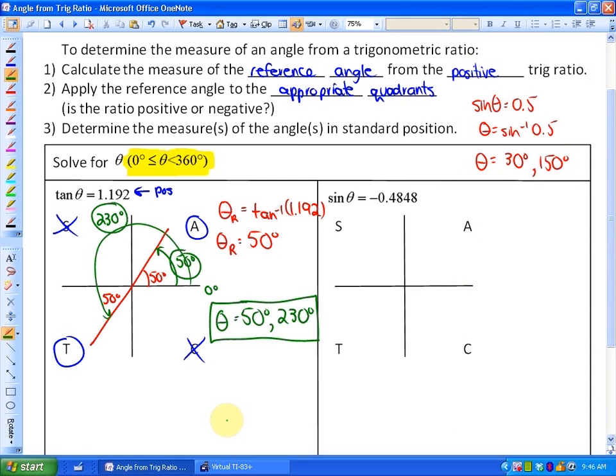The next example has a negative trig ratio. So sin θ is equivalent to negative 0.4848. So if we want to think about what quadrants that's going to be in, it's going to be where the sin ratio is negative. And the sin ratio is positive in quadrants 1 and 2. So it's negative in quadrants 3 and 4.